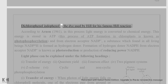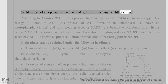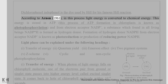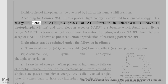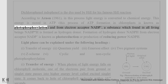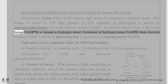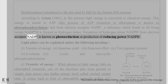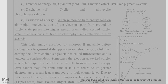Dichlorophenol indophenol is the dye used by Hill in his famous Hill reaction. According to Arnon (1961), in this process light energy is converted to chemical energy stored in ATP — a process known as photophosphorylation. From electron acceptor NADP+, a substance NADPH is formed as hydrogen donor. Formation of NADPH from NADP+ is known as photoreduction or production of reducing power.